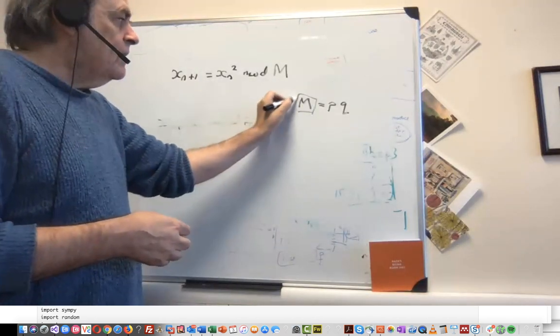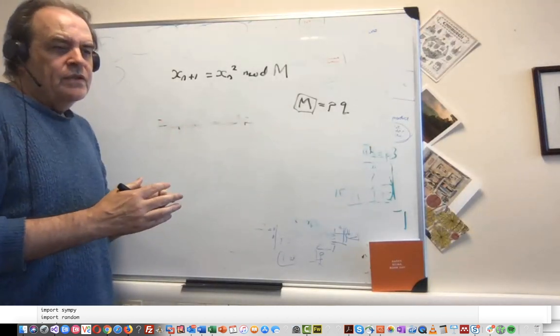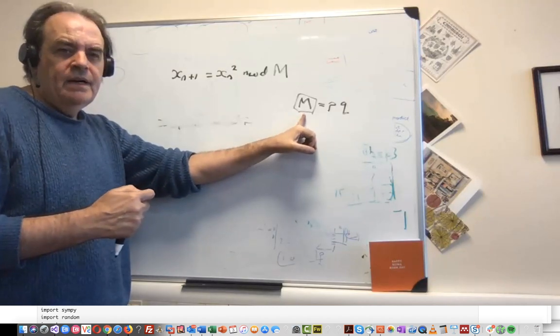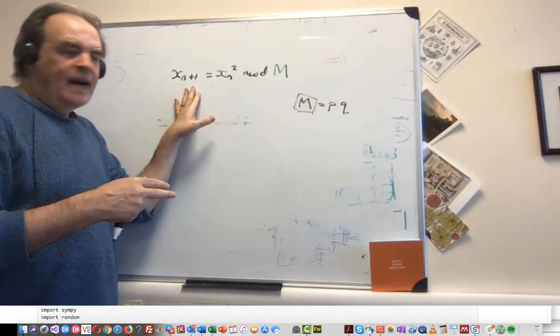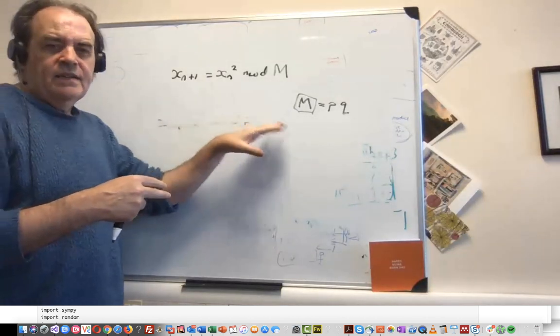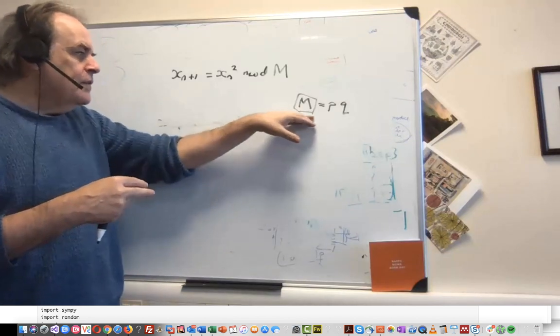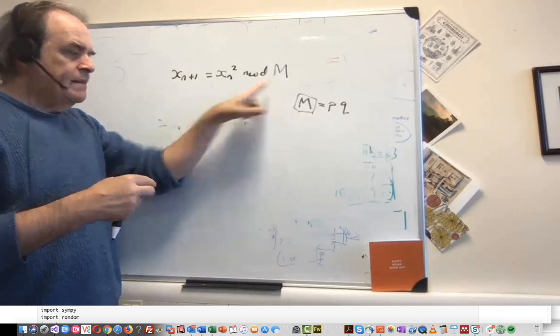The size of the random number generator, or the scope of it, will be defined by this value of m. The larger this is, the more values that we can actually create. This is defined as a finite field. The maximum value that we can get for our random number generator will be m minus one.